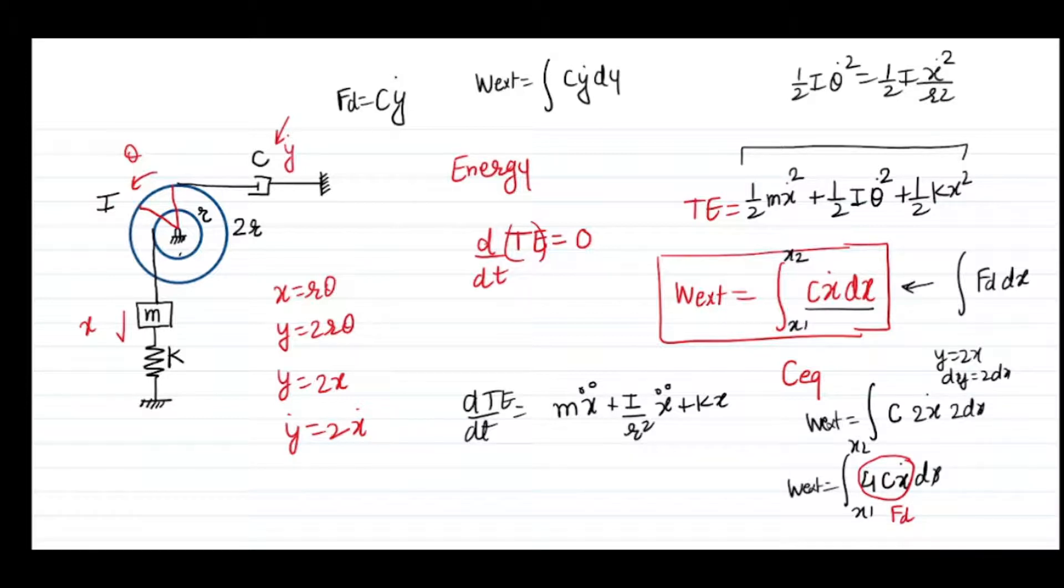I can use this damping term in my expression and finally my entire expression will be M X double dot plus I by R squared X double dot plus 4C X dot plus K X equals zero.